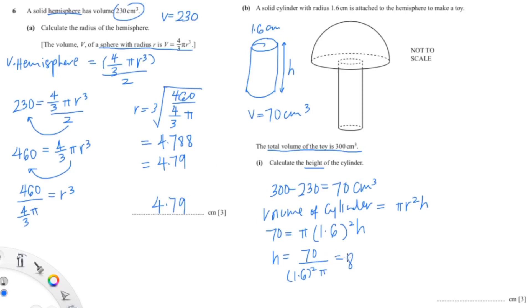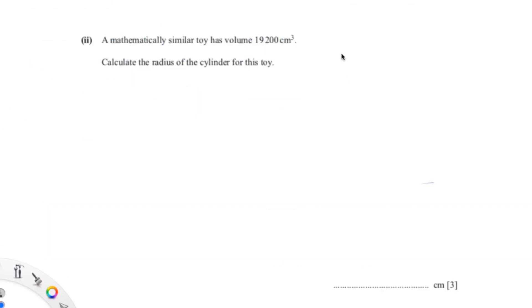You'll get a value of 8.70, so your height is 8.70 cm.